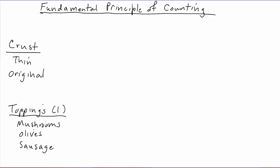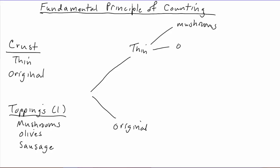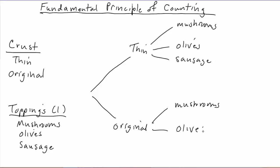One way to do this is to exhaustively list out all the different possibilities by making a decision tree. The first decision we have to make is what kind of crust: thin crust or original crust. Once we've chosen thin crust, for example, we choose a topping — mushrooms, olives, or sausage. Similarly, in the case of original crust, once we've made that choice, we branch out into the same toppings: mushrooms, olives, sausage.